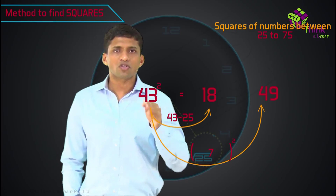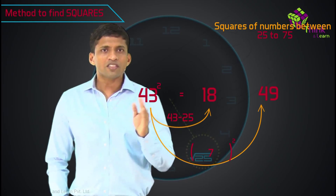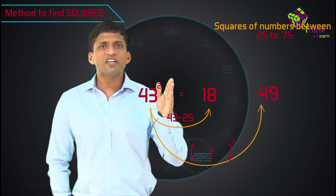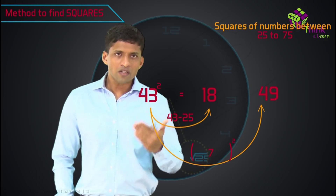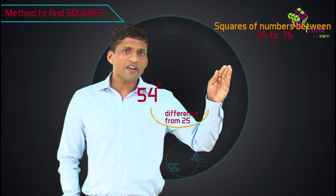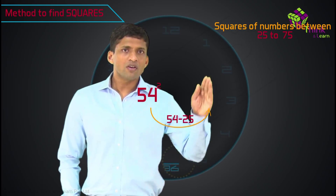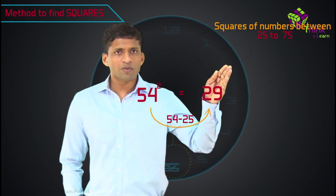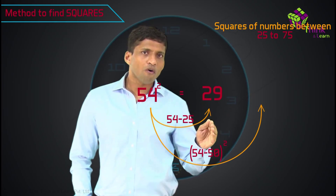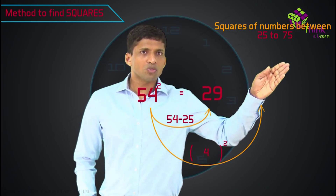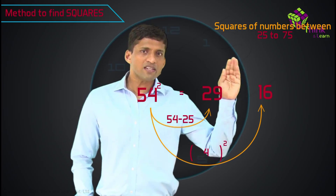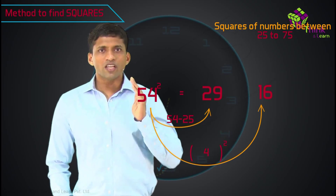This is the easiest method for writing down squares, using which all of you will know all squares of numbers up to 75 square. One more example: to find 54 square, take the difference from 25 — that is 54 minus 25 — we get 29 as the first two digits. Then take the difference from 50, which is 54 minus 50, you get 4. Square of that, write the last two digits as 16. So 54 square is 2916. Very simple!